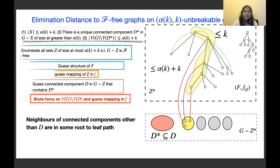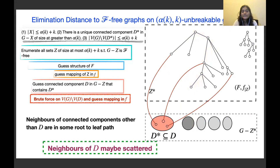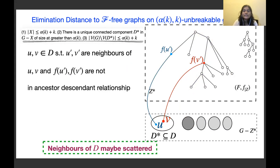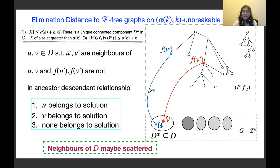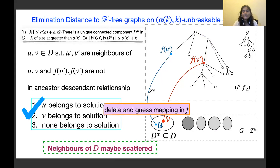The only difficult remaining case is connected component D. It is possible that the neighbors of D in X are scattered all around the forest F, which is problematic. It can happen that two vertices u and v have neighbors u' and v', and the mapped vertices of u' and v' are not in an ancestor-descendant relationship. To handle this we branch in three ways: either u belongs to the modulator, or v belongs to the modulator, or neither does. If u or v is guessed to be in the solution we delete them and guess their forest mapping.